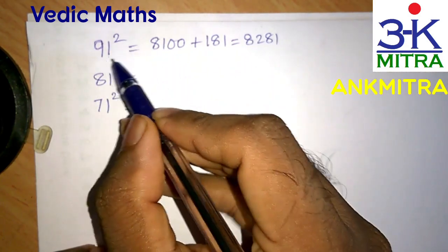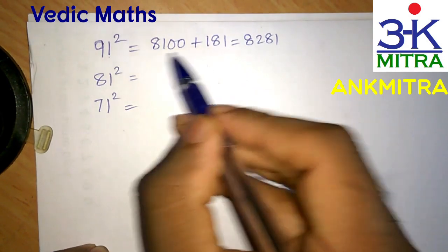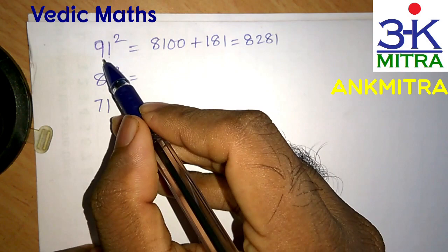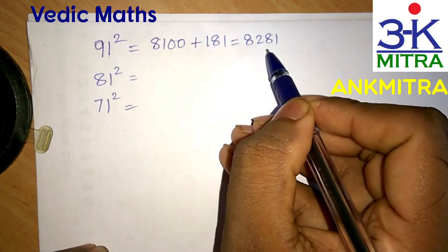To recap: first write down the square of 90, which is just before 91, then add the sum of 90 and 91. The addition gives us 181, and the final answer is 8281.